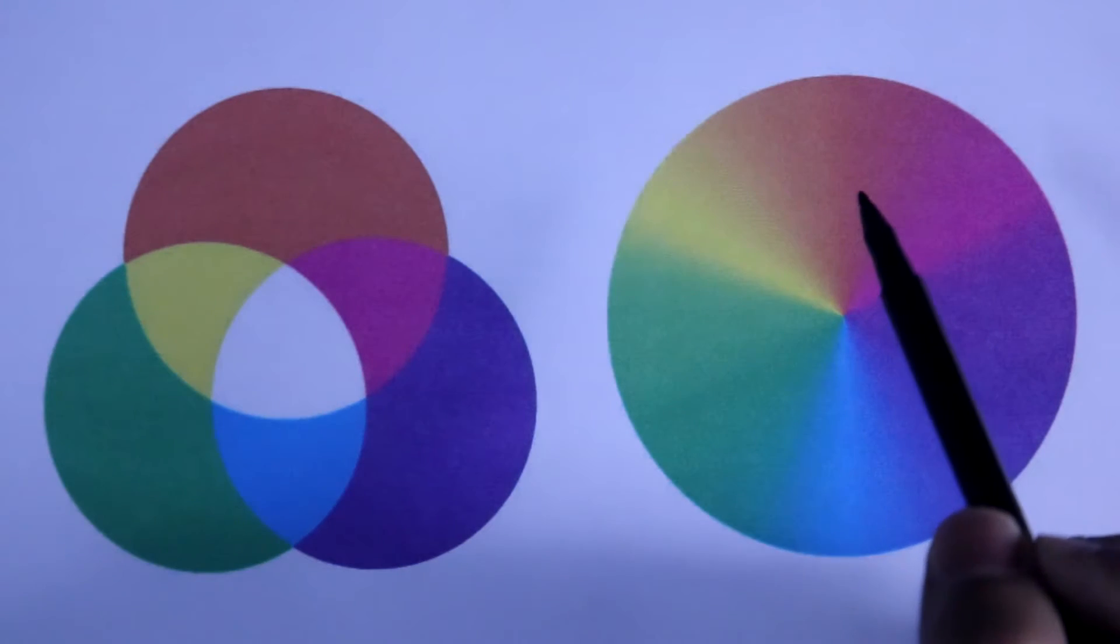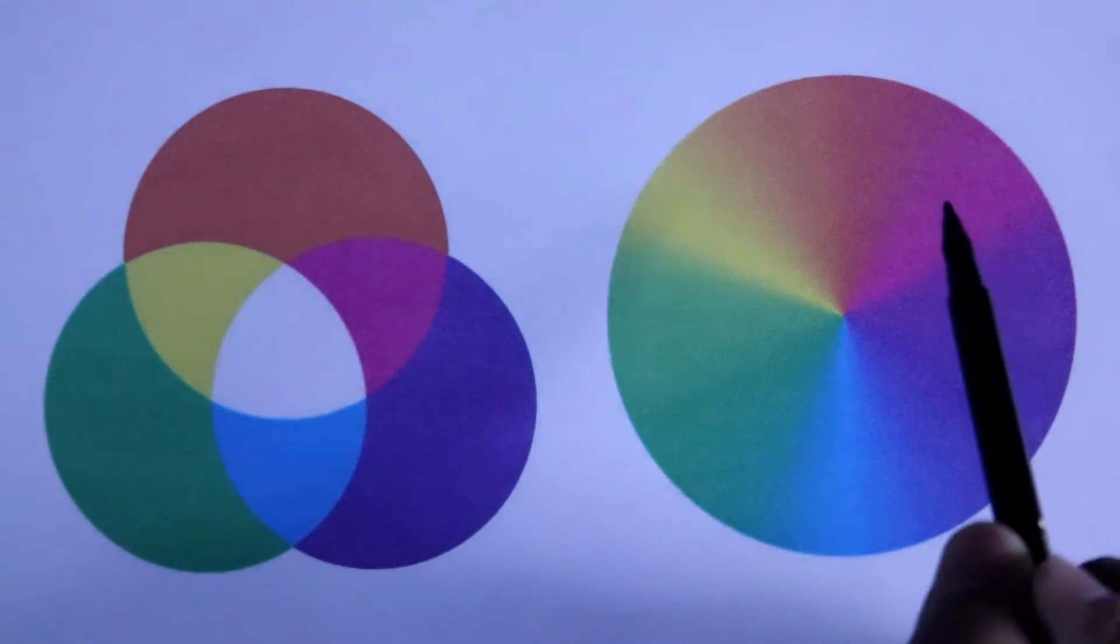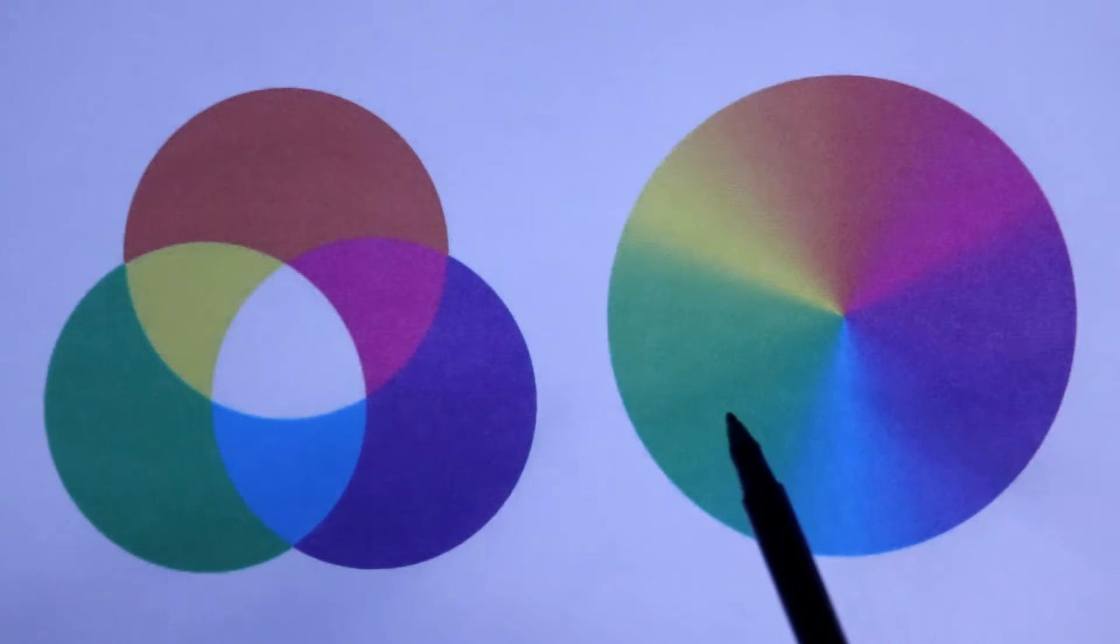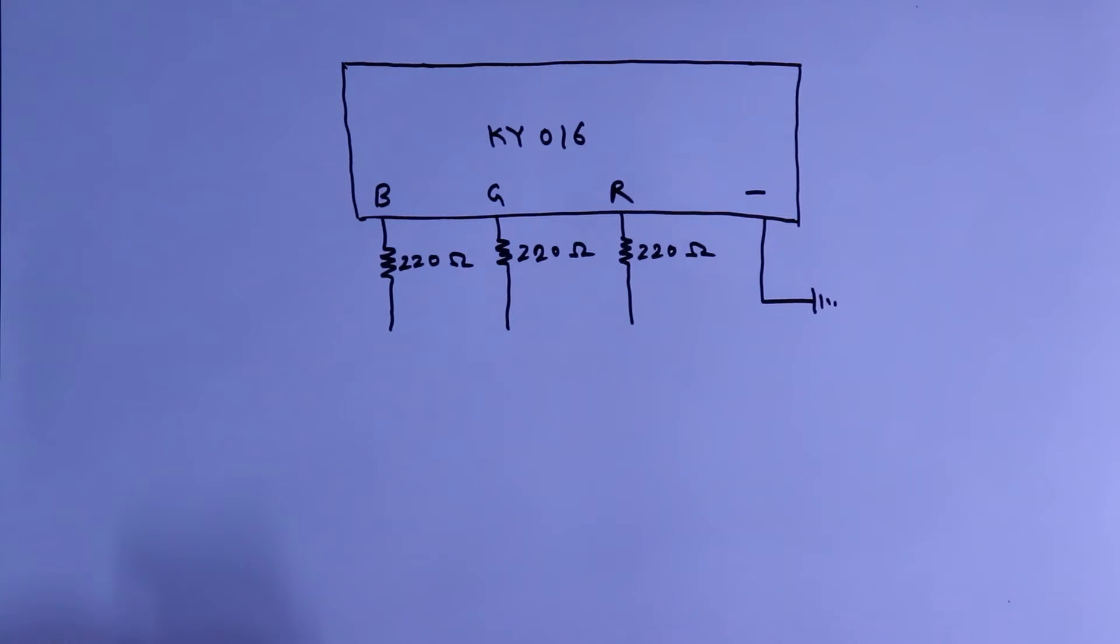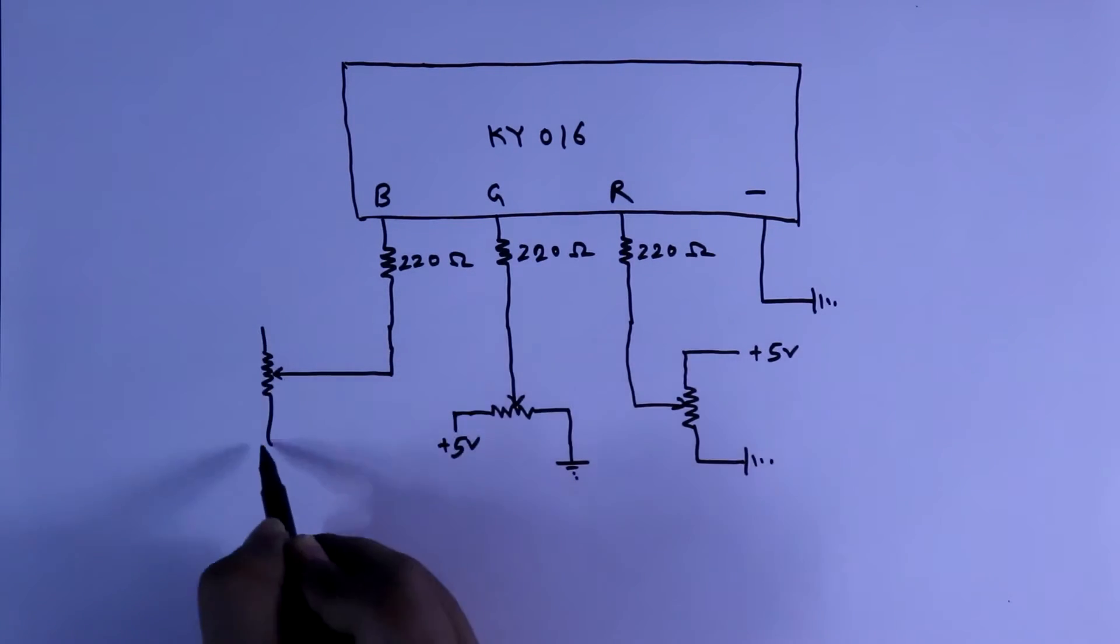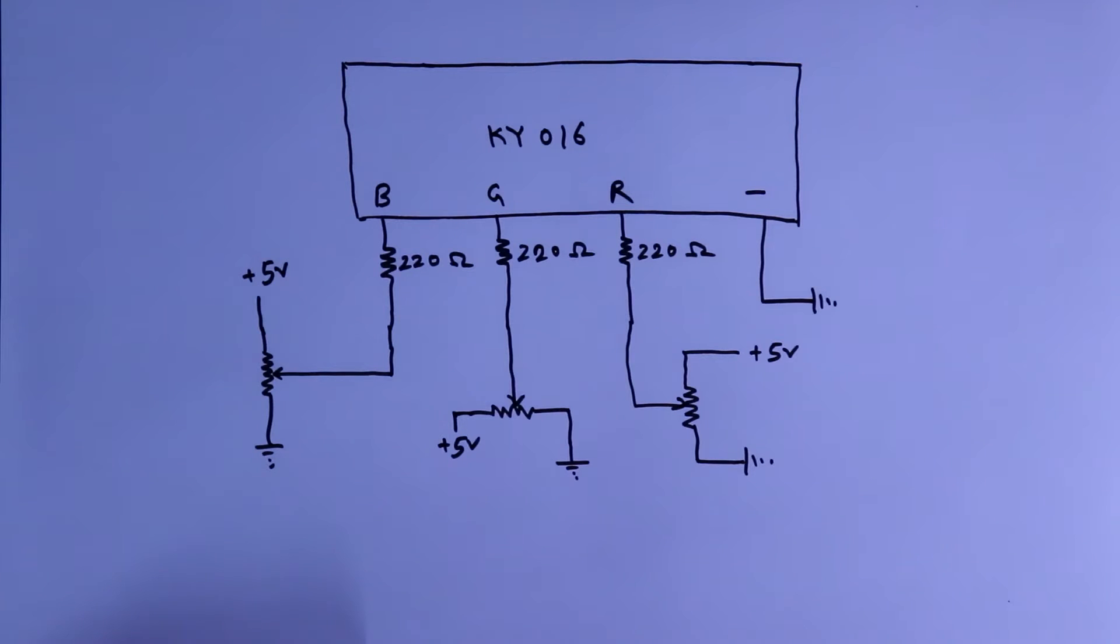And by adjusting the resistor value, then we will get the middle colors. Now to get more colors, we need to adjust the resistance value. For this, we have to connect potentiometer. The value of the potentiometer is 5 kilo ohms.